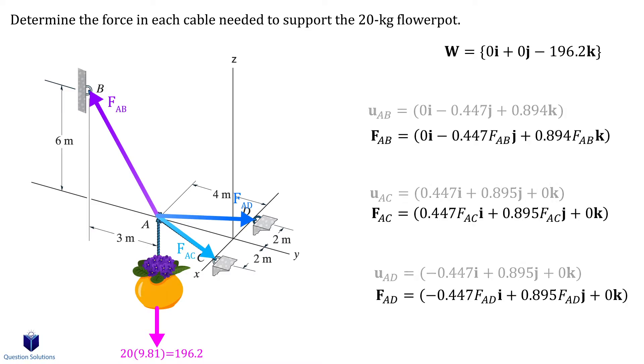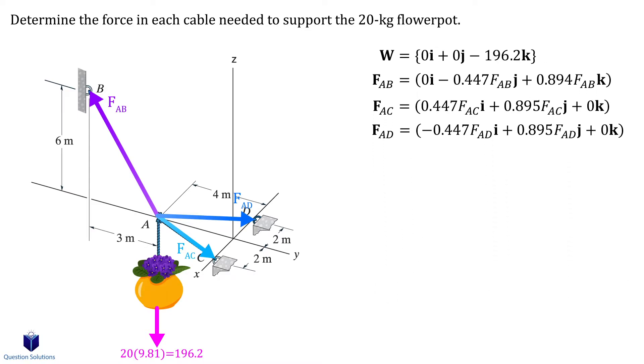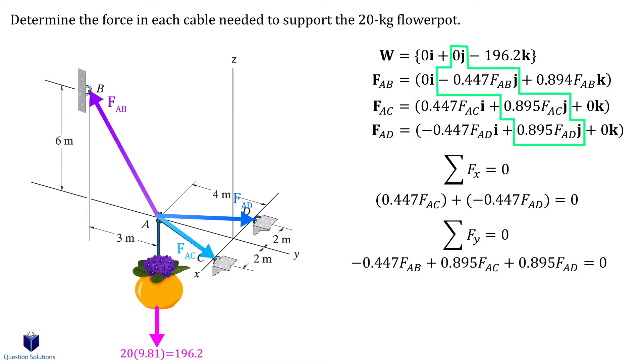We can finally express each force in Cartesian form. All we do is multiply the magnitude of the force by the unit vector. Now that we have all the forces we can equate all the individual components to zero. Let's start with the x components. So we see that we have two x components, both of them added together must equal zero.